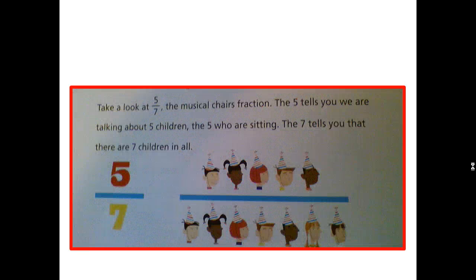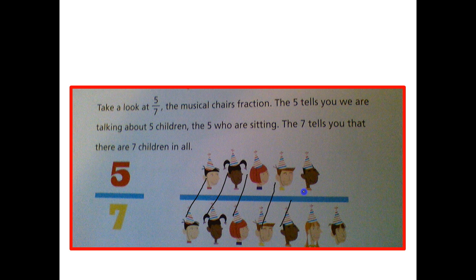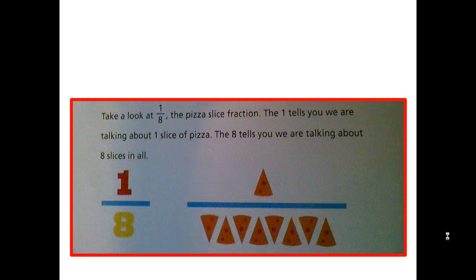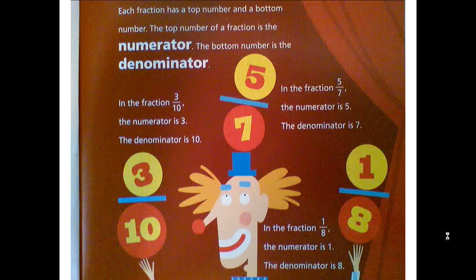Take a look at five-sevenths, the musical chairs fraction. The five tells you we are talking about five children, the five who are sitting. The seven tells that there are seven children in all. Take a look at one-eighth, the pizza slice fraction. The one tells you we are talking about one slice of pizza. The eight tells you we are talking about eight slices in all. Each fraction has a top number and a bottom number. The top number is the numerator. The bottom number is the denominator.